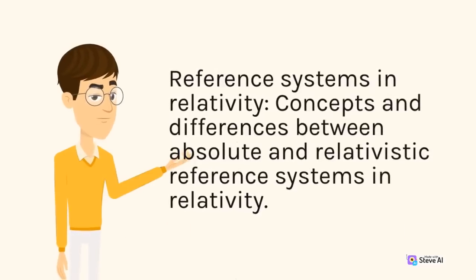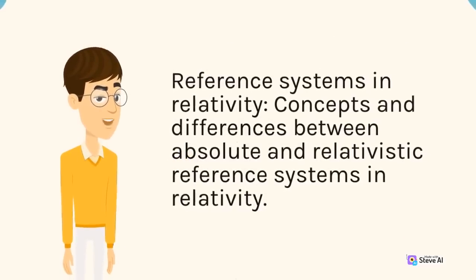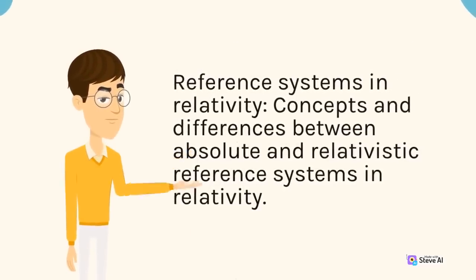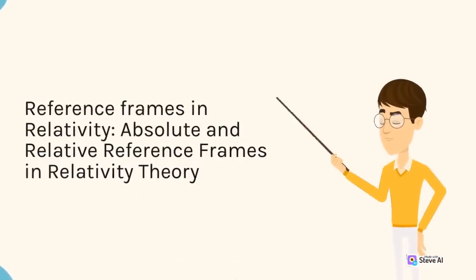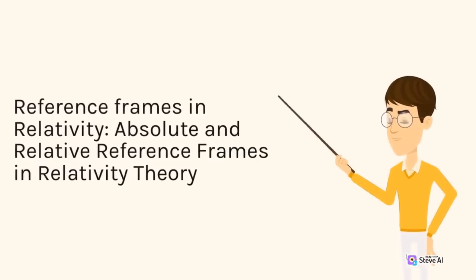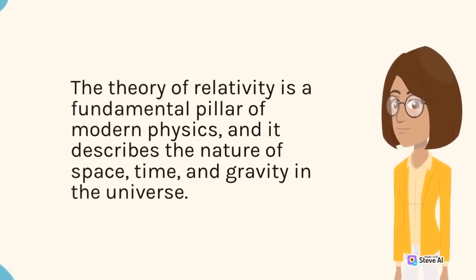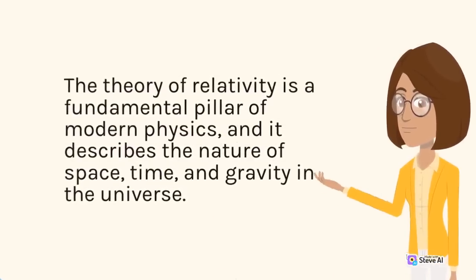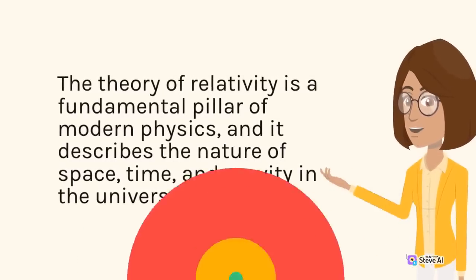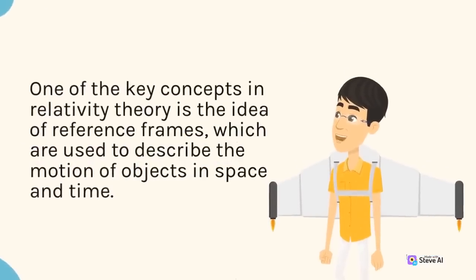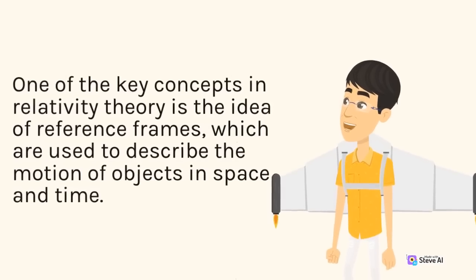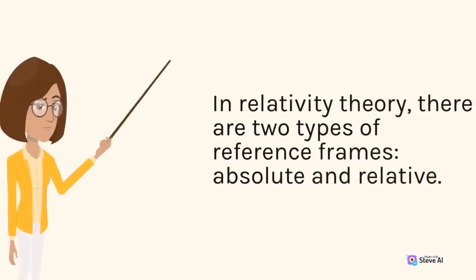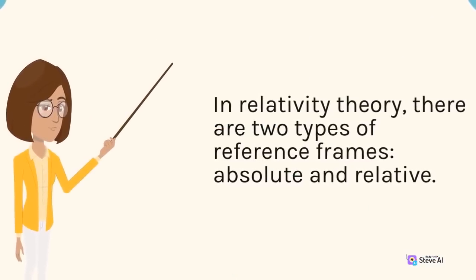Reference frames in relativity: concepts and differences between absolute and relativistic reference systems. The theory of relativity is a fundamental pillar of modern physics, describing the nature of space, time, and gravity in the universe. One of the key concepts in relativity theory is the idea of reference frames, which are used to describe the motion of objects in space and time. In relativity theory, there are two types of reference frames: absolute and relative. Absolute reference frames are those that are fixed and do not change with respect to the universe.